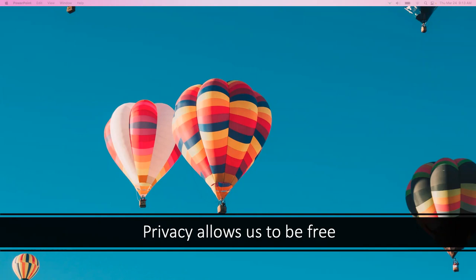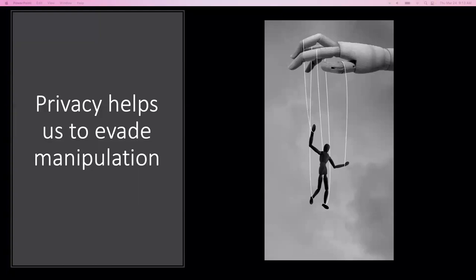The second most important factor of privacy is that it helps us evade manipulation. The more knowledge others have about us, the more power they have over us. Think about the Cambridge Analytica scandal — people were able to get information about Facebook users and their friends, create massive datasets of behavioral data, and then tried to manipulate these people through advertisements to influence their voting preferences or political views. It was possible because they could learn psychological changes in these people.